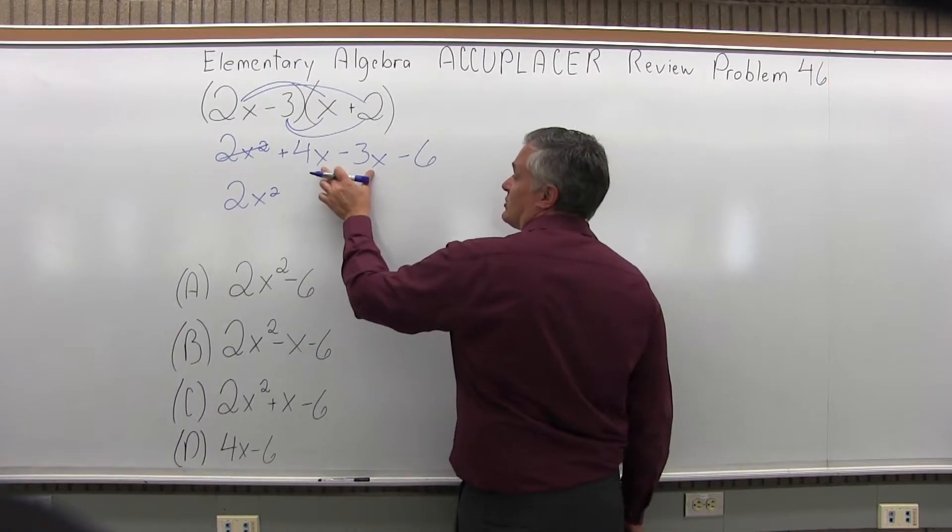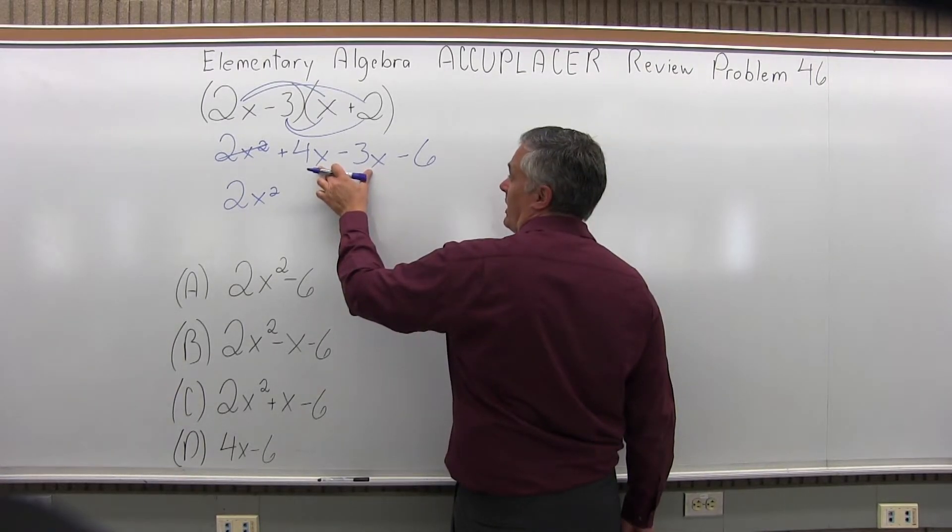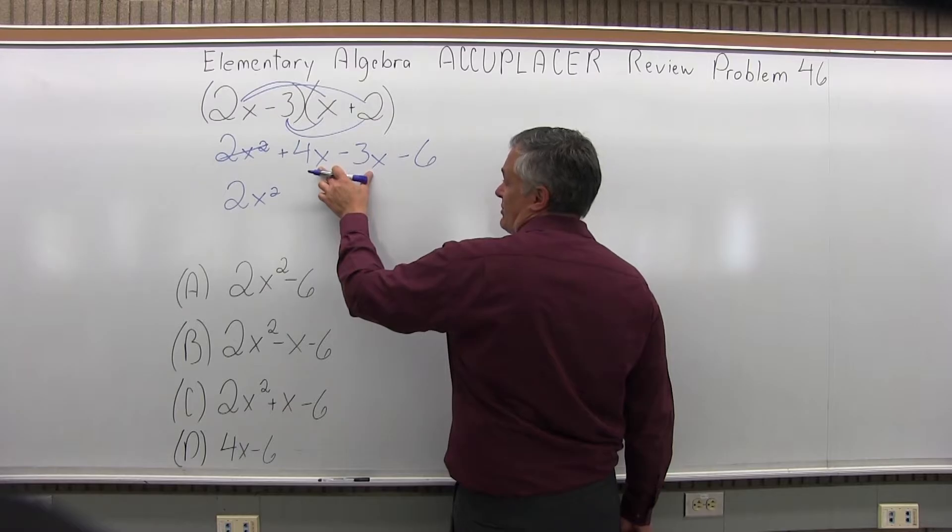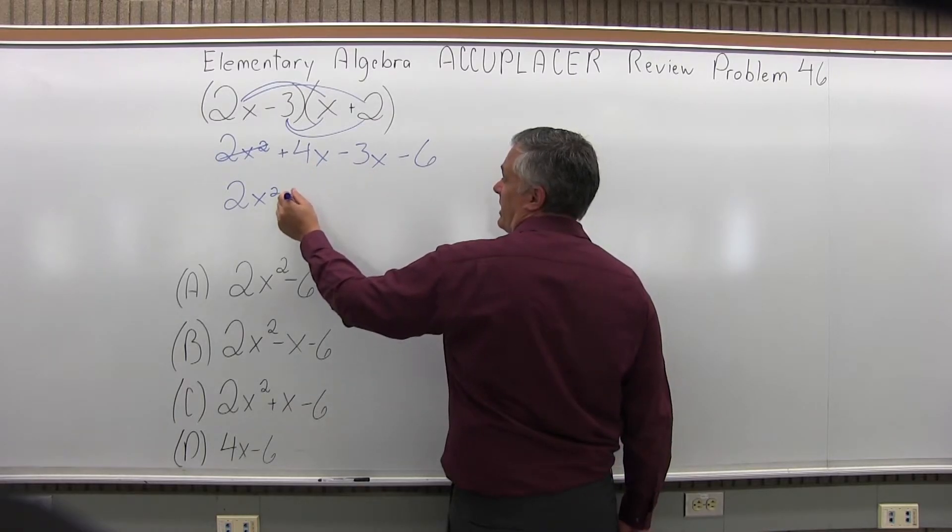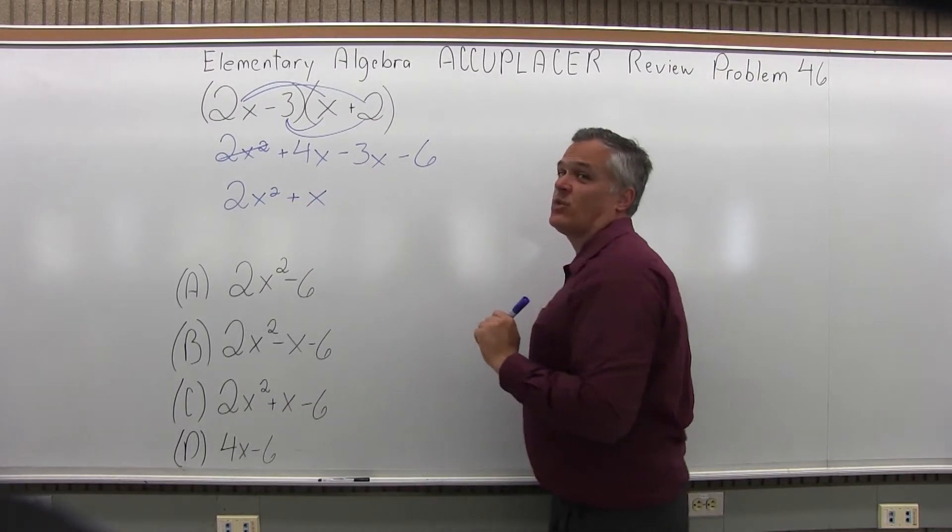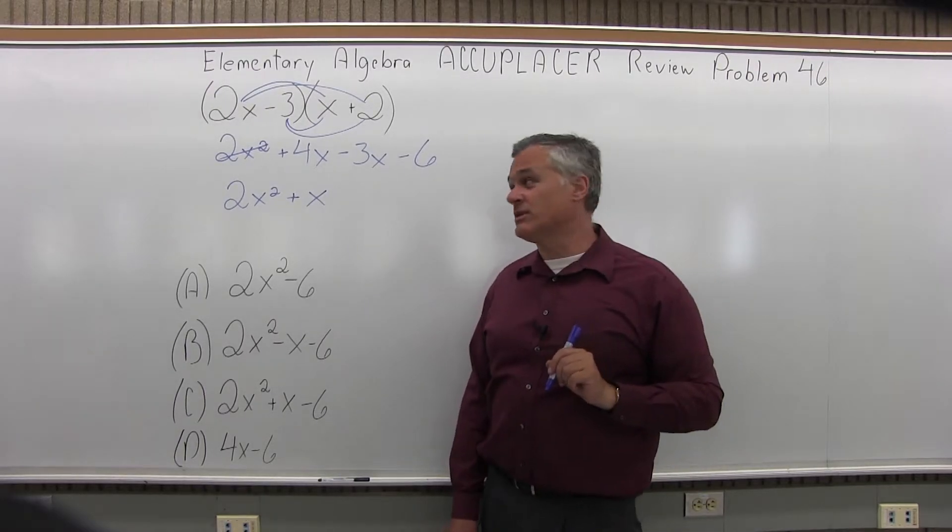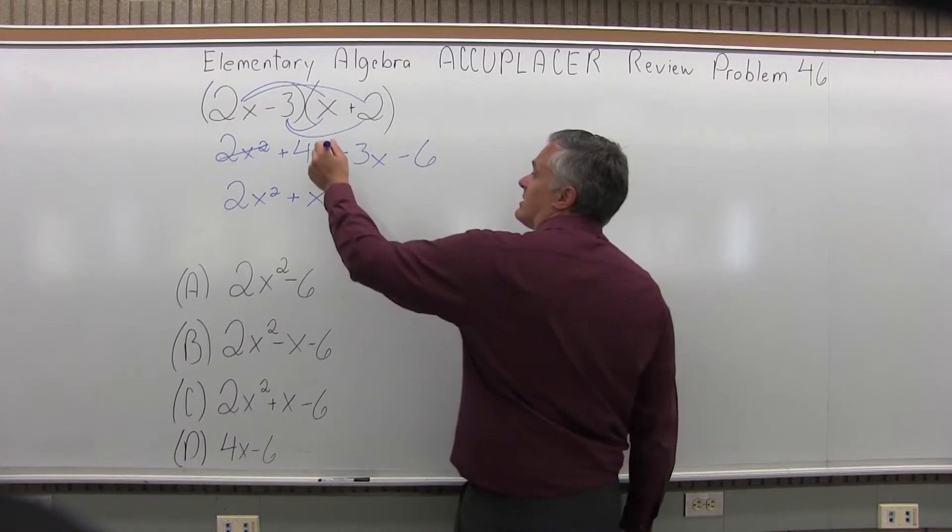Now for the x's or x's to the first power, I have positive 4x minus 3x. So that's going to be a positive 1x. You don't have to write the 1 in front, you can write just plain old x. And that takes care of my x's.